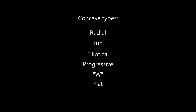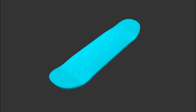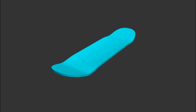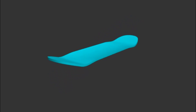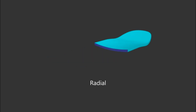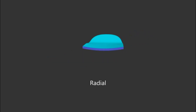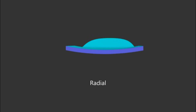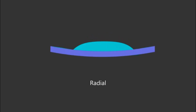The concave type can be seen if we take a cross section of a skateboard. The simplest type of concave is radial, which has the shape of a circular arc. This provides a smooth, continuous feeling concave.